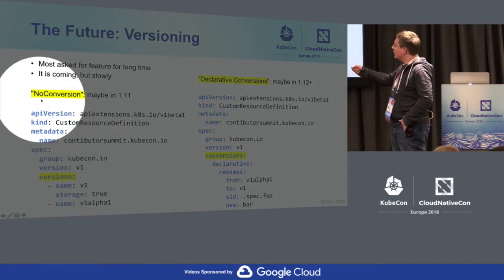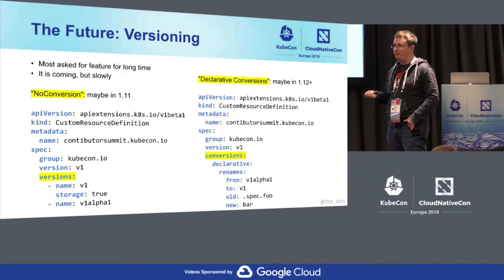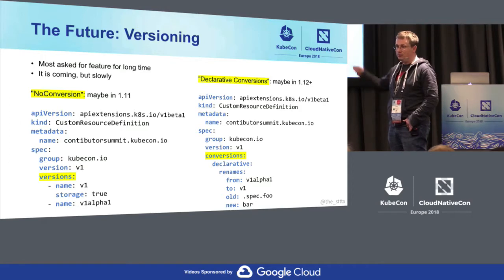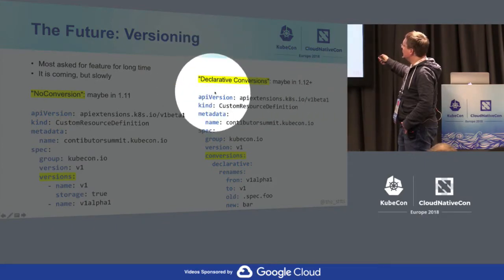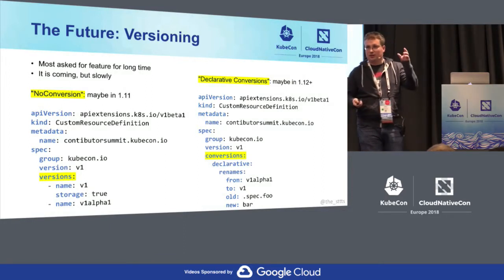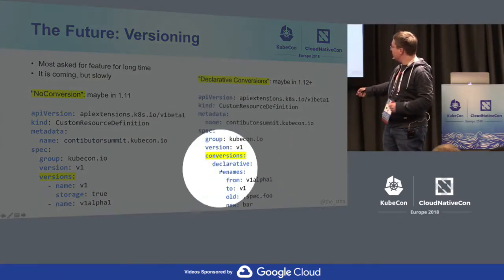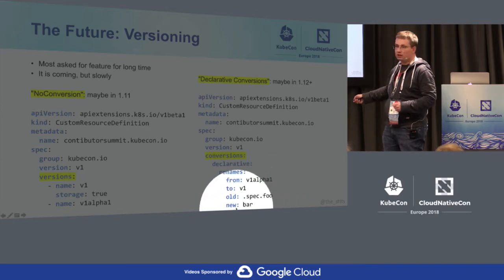In 1.11, we are working on adding what we call no-conversion. We add version support — we can add several versions — but there is no conversion in between. So if you rename fields, it will not help you yet. But at least you can go from v1alpha1 to v1. The Istio team is asking us a lot about that. They want to be stable with some APIs, and this feature will help them. For 1.12+, we want to have limited declarative conversion — if you rename a field from v1alpha1 to v1beta1, you can express that declaratively without writing a webhook. It's a sketch of an API still under discussion.